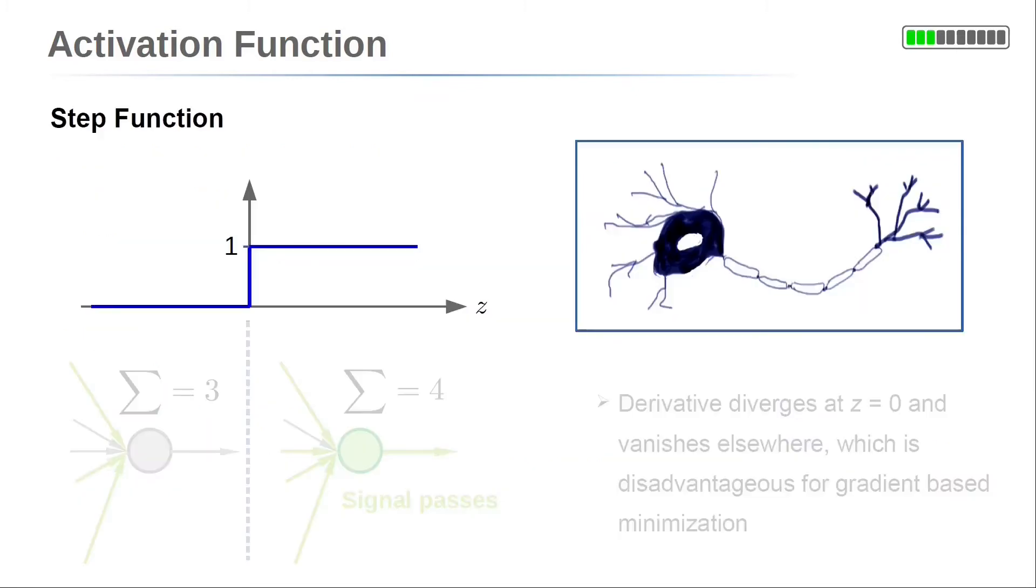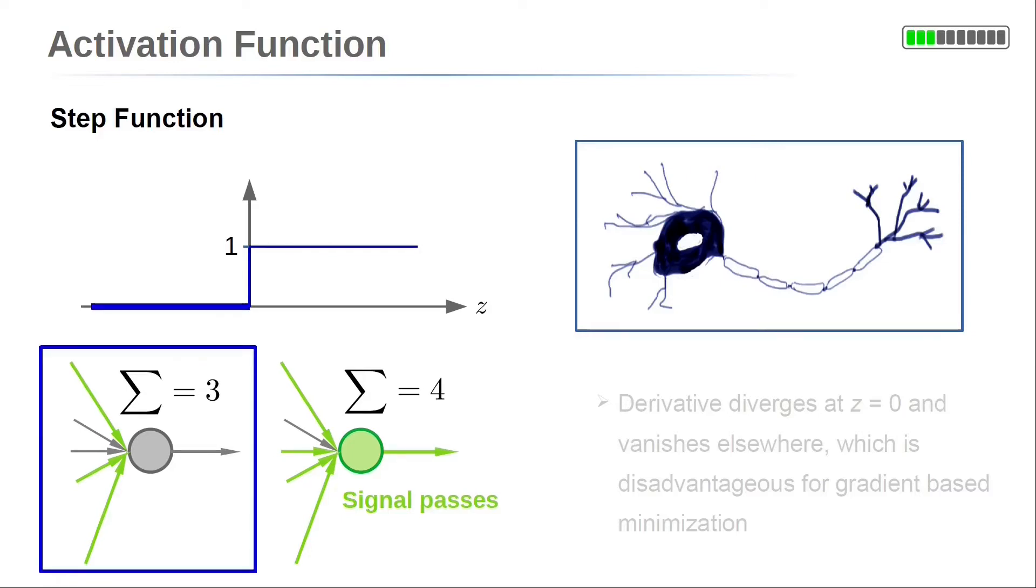A function which might come into our head for an activation function is the step function. This activation function is related to the processes in our brain. Neurons in the brain aggregate the outputs of several other neurons. Only when the aggregated value is above a certain threshold, the signal is passed.